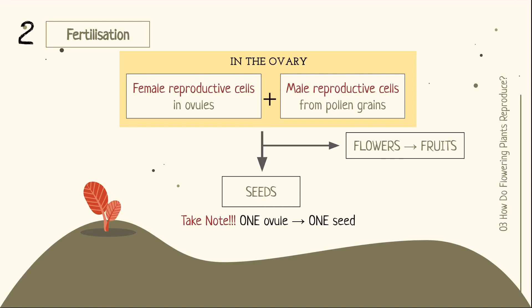What happens after pollination? Fertilisation! When pollen grains land onto the stigma, the male reproductive cells from the pollen grains travel down and fuse with the female reproductive cells in the ovule, which is in the ovary. After fertilisation, the flower drops its petals and the ovary swells to become bigger — the ovary is now the fruit. The ovules that have been fertilised become the seeds you normally find in fruits. One ovule forms one seed, so if a flower has many ovules and all are fertilised, the fruit would have many seeds.